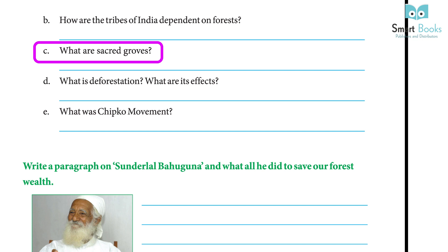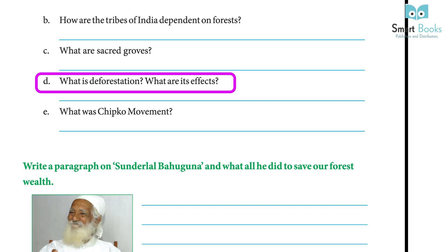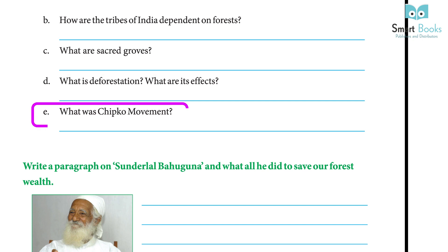(c) What are sacred groves? Answer: An area in the forest which contains trees and medicinal plants on the verge of extinction is called a sacred grove. (d) What is deforestation and what are its effects? Answer: Cutting down trees on a large scale is called deforestation; it changes the climate adversely. (e) What was the Chipko Movement? Answer: The women of Uttarakhand protested the cutting of trees by hugging them. It started in 1973 and was led by Sundarlal Bahuguna.